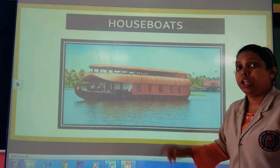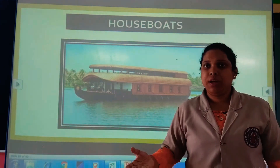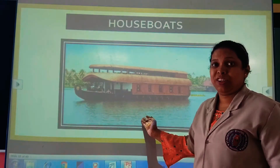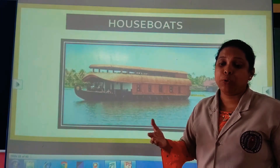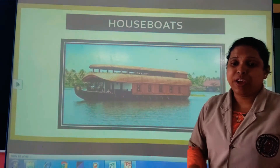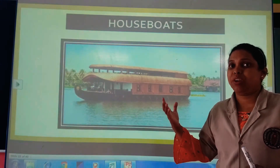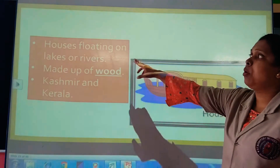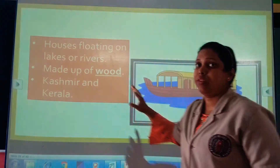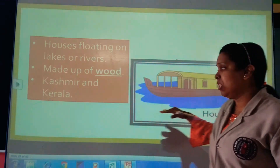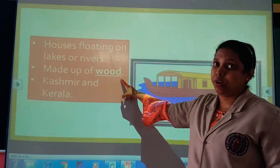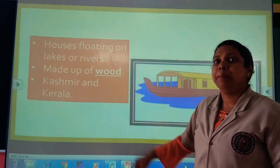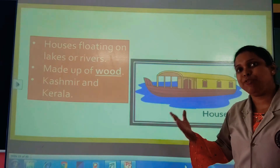The third type is a houseboat. Houseboats are found where there is water — in lakes or rivers. You can find houseboats mainly in Kashmir and Kerala. People live in houseboats, which float on lakes or rivers. They are made up of wood. Many people might have visited and seen them.